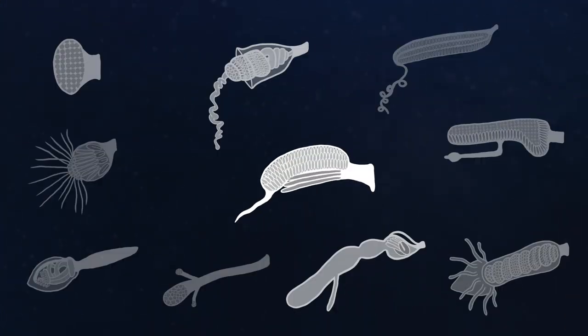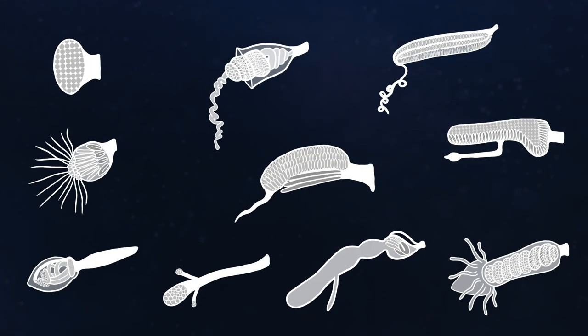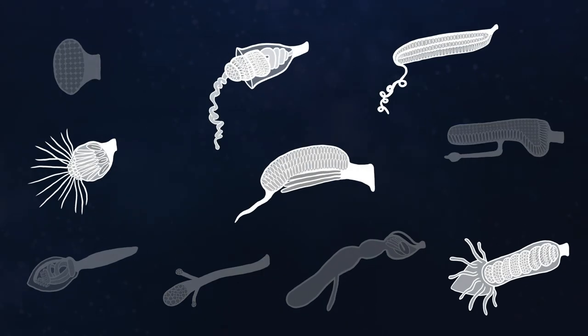Tentilla come in many different shapes and sizes across a diversity of siphonophore species, with different nematocysts adapted to capturing different prey. Some are specialized for capturing fish, others to capture crustaceans.